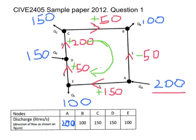What we need to do is transfer all this data into the table that we'll use to help us do the iteration. The numbers are written in litres, which are convenient numbers to use. We'll convert them to metres cubed per second, which just means dividing by a thousand.